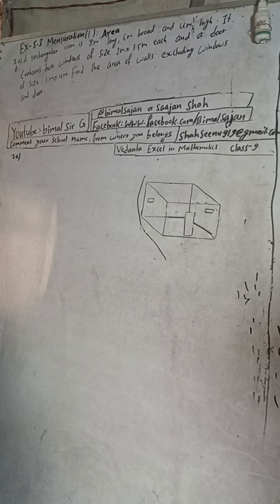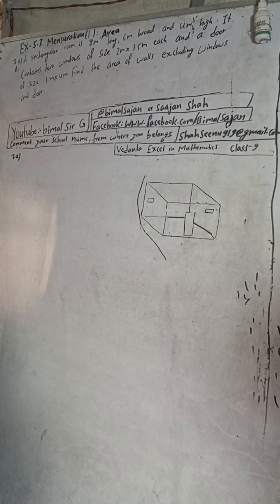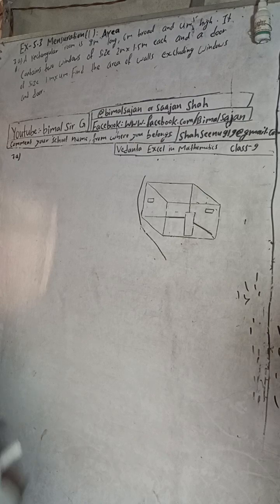It contains two windows of size 2 meter into 1.5 meter each and a door of size 1 meter into 4 meter. Find the area of walls excluding windows and doors. So this is the case, let's draw the figure.